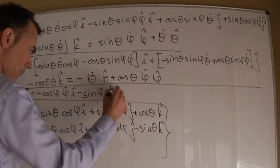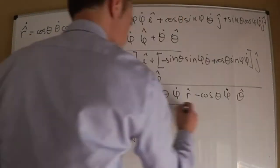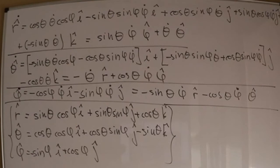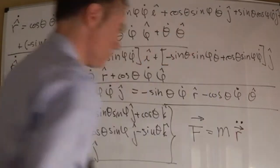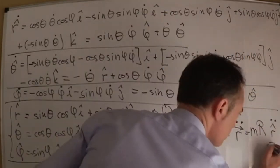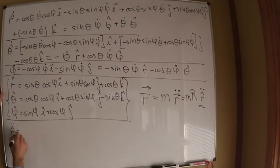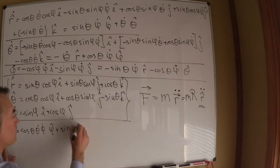R-hat, theta-hat, and phi-hat are the unit vectors in spherical coordinates. These vectors do change as we move along space — they point in different directions. Take your time to go over these results. We differentiate again to get r-hat-double-dot, which is what we need to write Newton's second law in spherical coordinates for this problem.